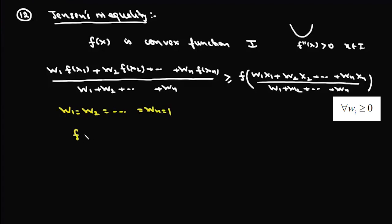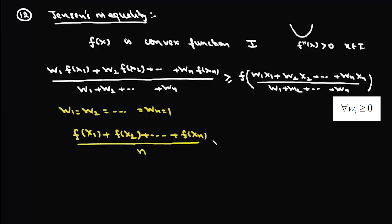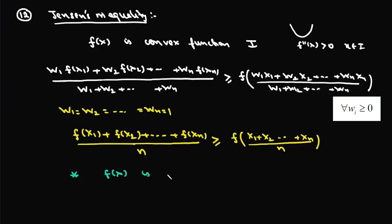If we take all the weights as one, we get the simple case: [f(x1) + f(x2) + ... + f(xn)] / n ≥ f([x1 + x2 + ... + xn] / n). That is, the arithmetic mean of the function values is greater than or equal to the function value at the arithmetic mean of x1, x2, ..., xn. If f(x) is concave, the sign reverses.